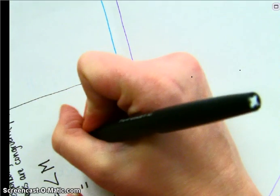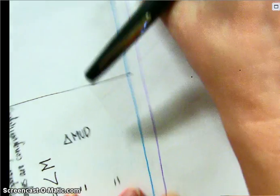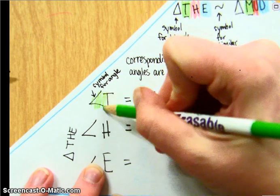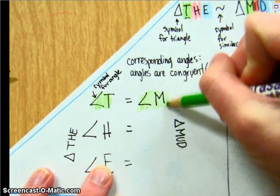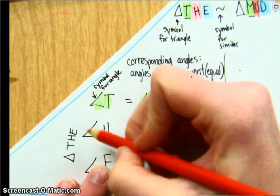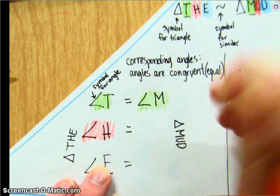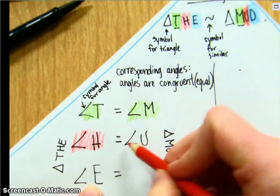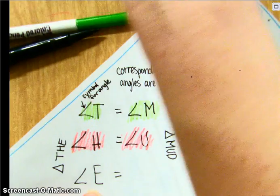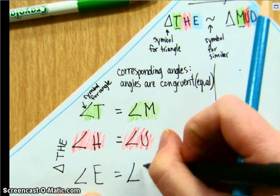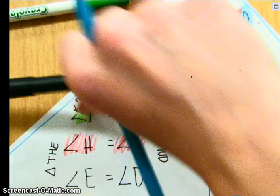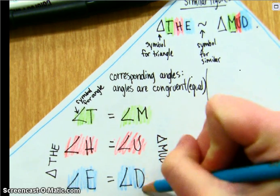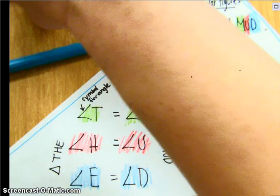So therefore, all of these are going to be from triangle MUD. T and M are corresponding angles. H corresponds with angle U. And angle E corresponds with angle D. If you look at your similarity statement, or if you look at the triangles themselves.